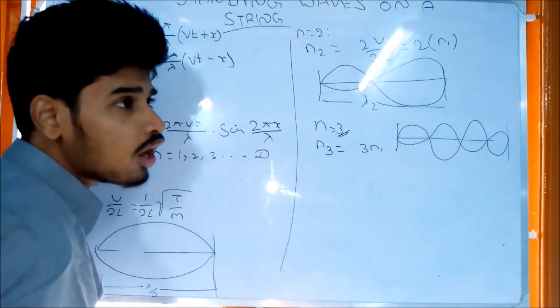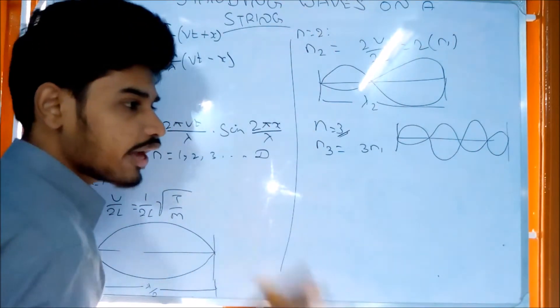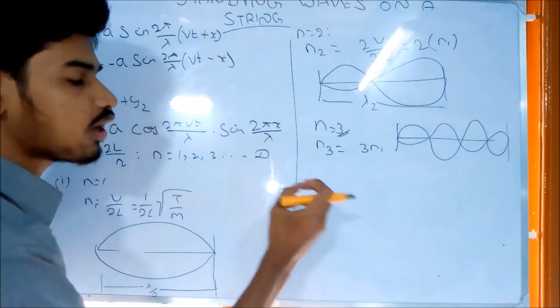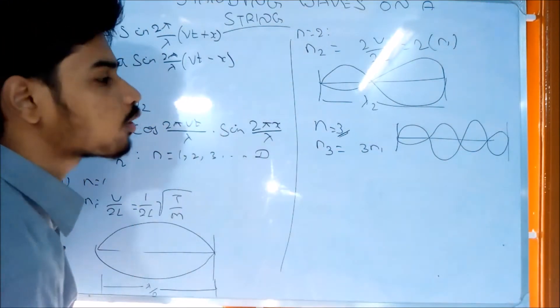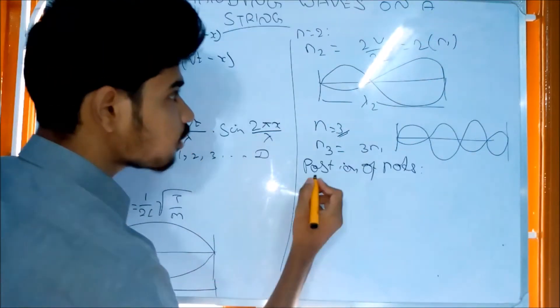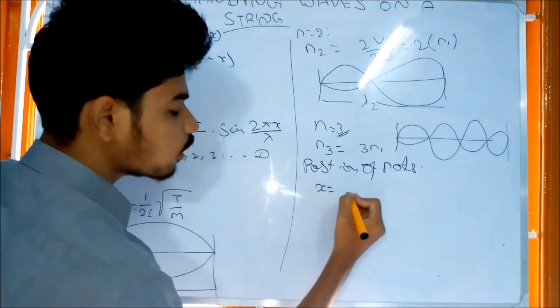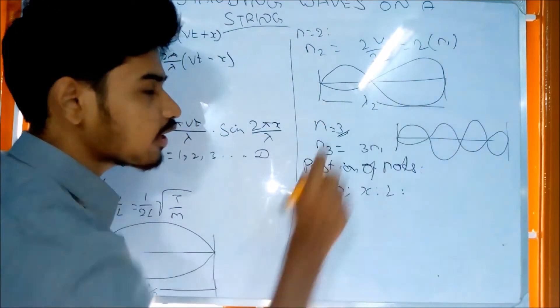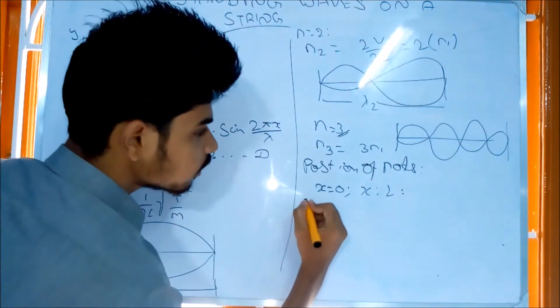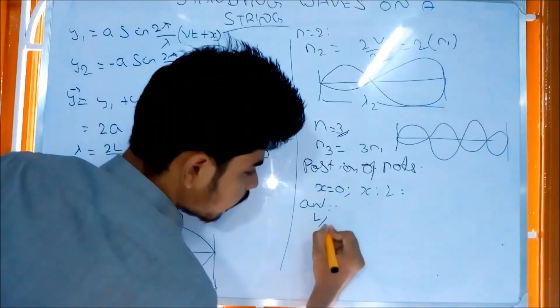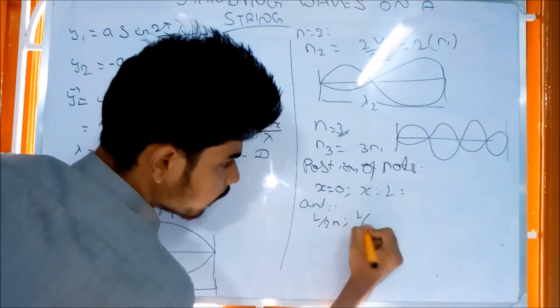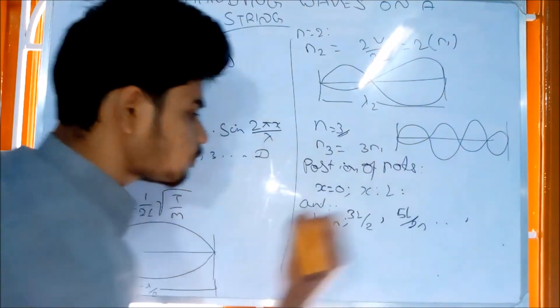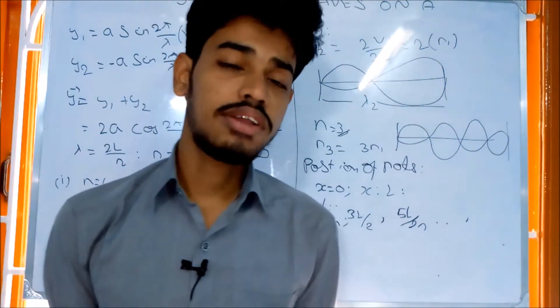You can practice drawing these modes easily. Now for the positions of the nodes, starting from 0 and going to x, where L is the length of the string. The anti-nodes are at positions L/2n, 3L/2n, 5L/2n, and so on. This completes the explanation of standing waves on a string.